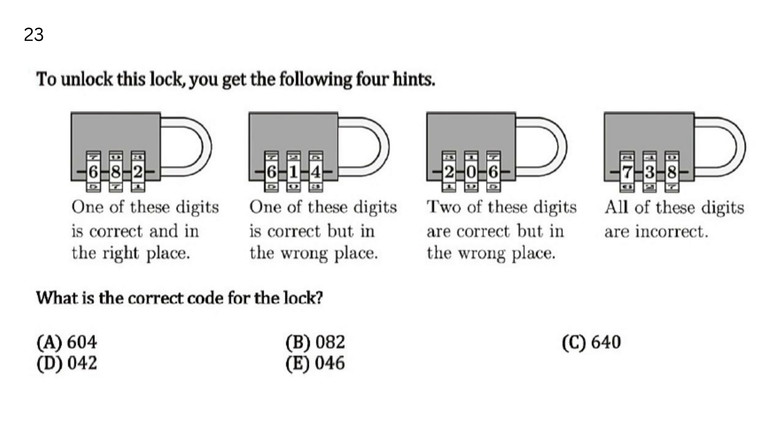This lock unlock - four hints have been given. Hint number 1 says that one digit is correct and it is in the right place. Hint 2 says that one digit is correct but it is in the wrong place. The third hint says that two of these digits are correct but in the wrong place. And the fourth hint says that all of these digits are incorrect.